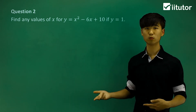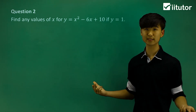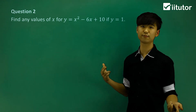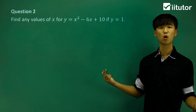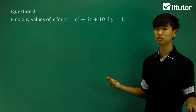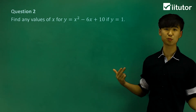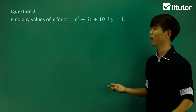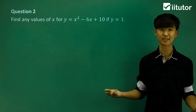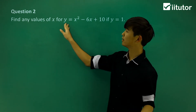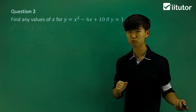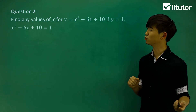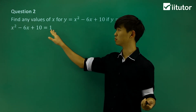Now looking at the next one: find any values of x for our quadratic y = x² − 6x + 10, if y is equal to 1. So y is equal to 1 in this case. Let's put 1 in place of y and rewrite the quadratic equal to 1.